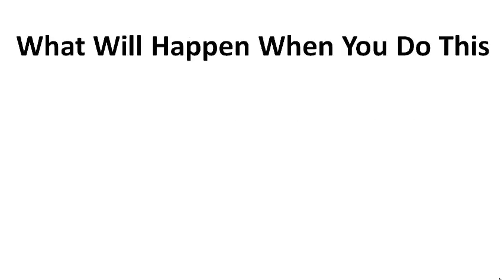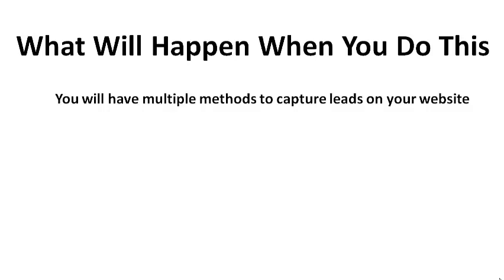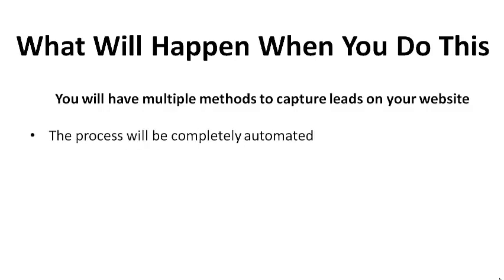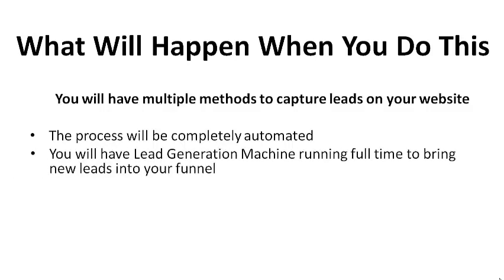So let's talk about what will happen when you do this. Once you have this set up, you're going to have multiple methods to capture leads on your website. There are a lot of leaky holes, and if you have something like this set up, you're going to start plugging those holes and getting a lot more leads. The process is going to be completely automated — you'll have a lead generation machine running full-time to bring new leads into your funnel, working for you around the clock.